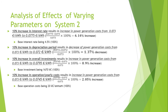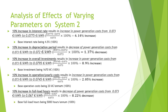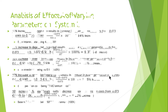Similarly, a 10% increase in yearly operation cost will increase the power generation cost by 2.05%. Also, a 10% increase in the full load hours will basically decrease the power generation cost by 8.22%.